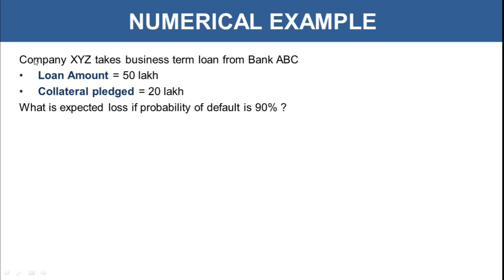Let's understand this with a numerical example. Company XYZ takes a business term loan from Bank AVC. The loan amount is 50 lakh rupees and the collateral pledged is 20 lakh rupees. What is the Expected Loss if the Probability of Default is 90%? Based on internal assessment, the bank has assigned a PD of 90%, which is on the higher side since it is a longer-term business loan.